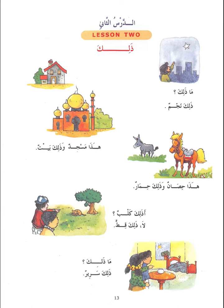So we have هذا, which means 'this.' If I want to say 'that,' then I use the word ذلك. For example: ما ذلك — what is that? ذلك نجم — that is a star. ذلك is a demonstrative pronoun that denotes something which is far.